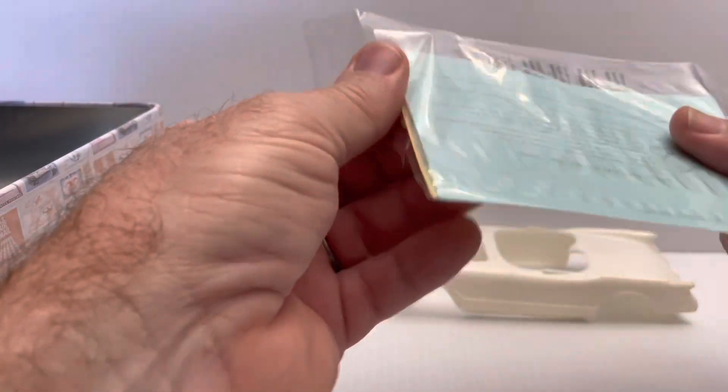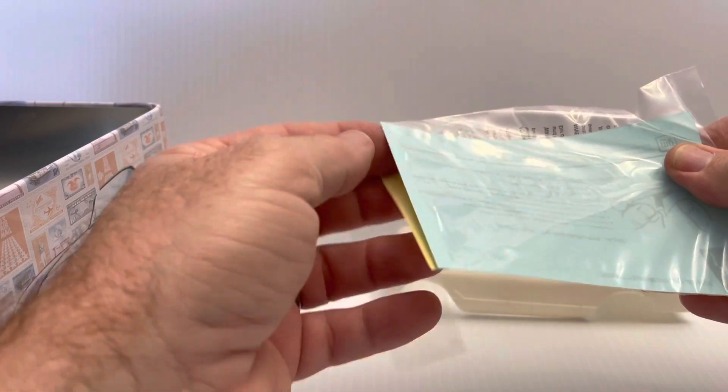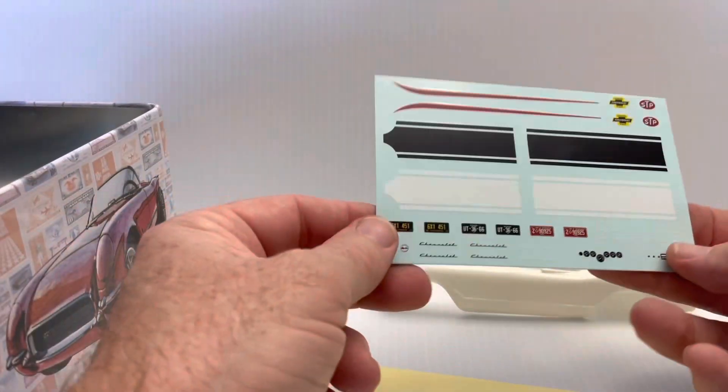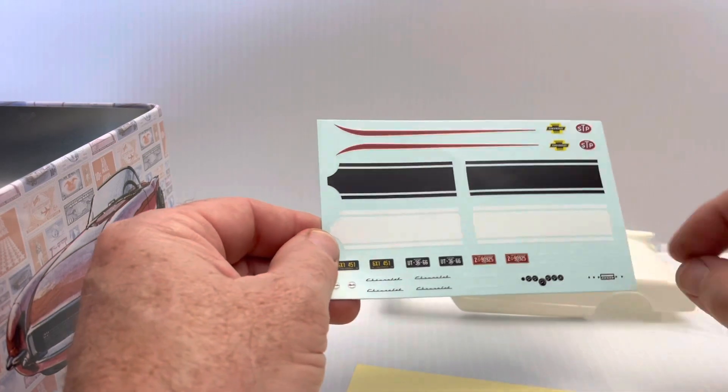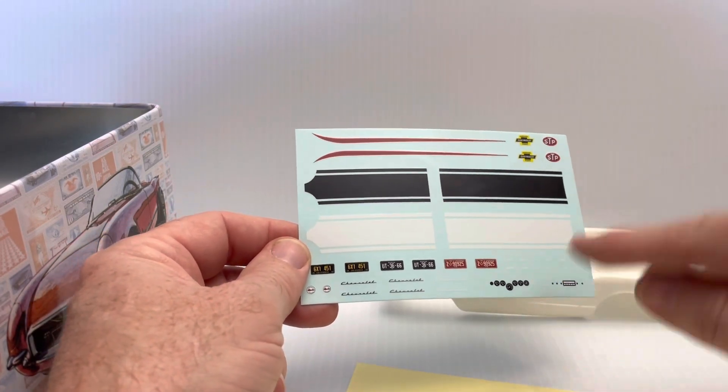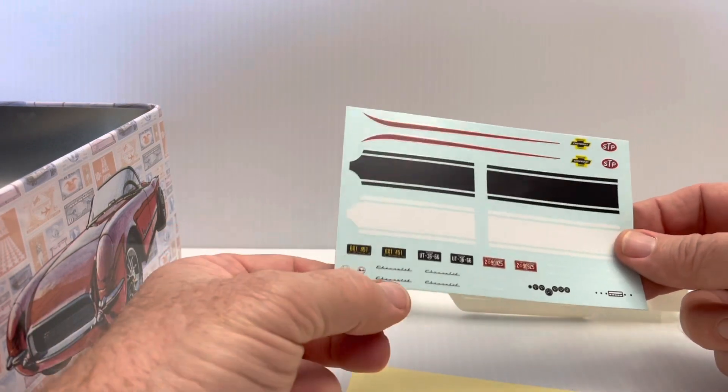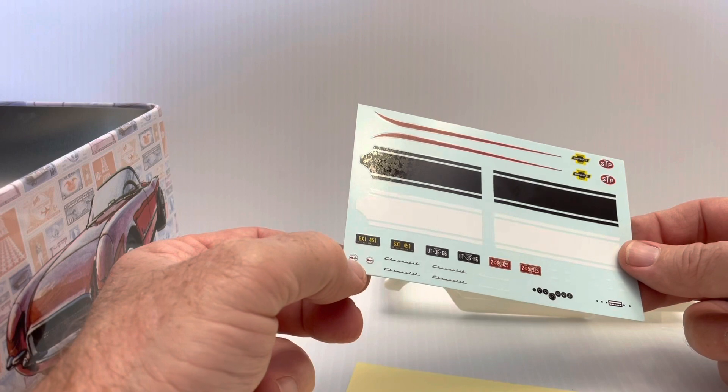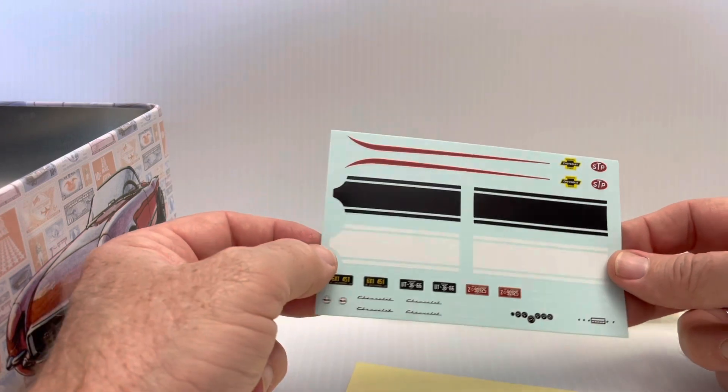Decals look good. Let me get them out. That's a nice touch. We have gauges for the dash, Chevrolet logos, cross flag Corvette emblems, and some stripes, some side stripes.